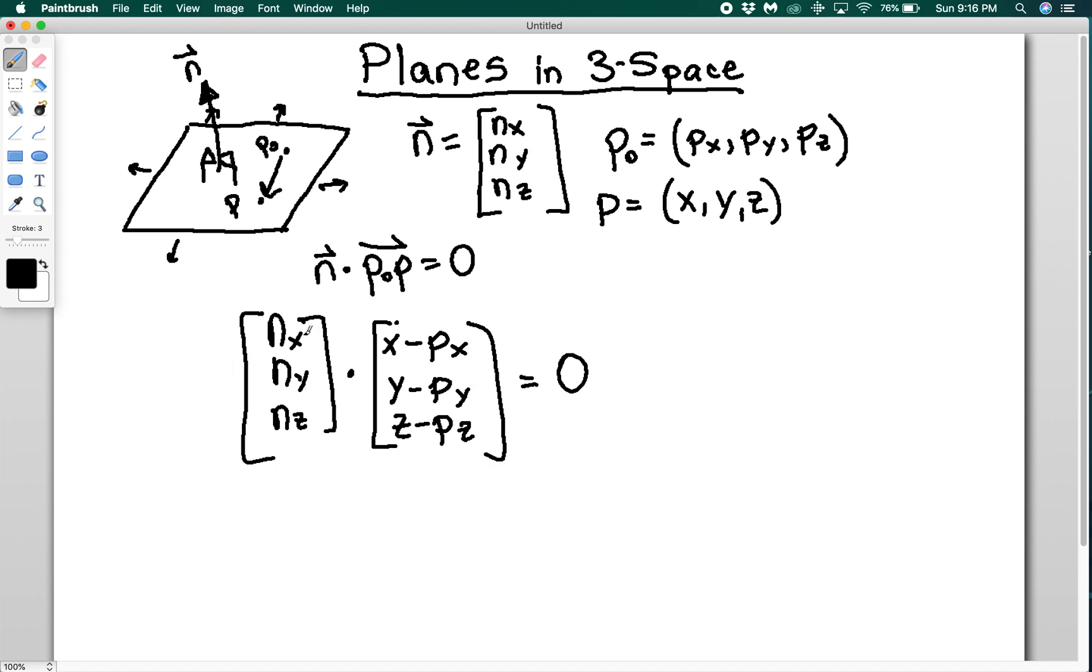So if I do this out, if I distribute, okay, nx times x minus nx times px. So I'm going to take all the nx variable terms and leave them on the left, and all the negative nx, p, x, y, z terms, and I'm just going to move those over to the right. So I'm going to have nx times x plus ny times y plus nz times z is equal to nx times px plus ny times py plus nz times pz.